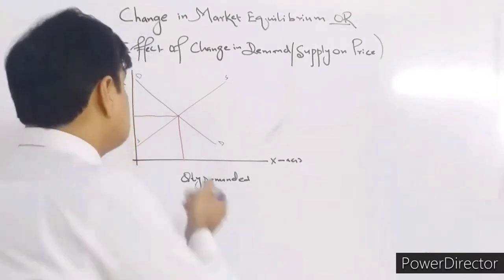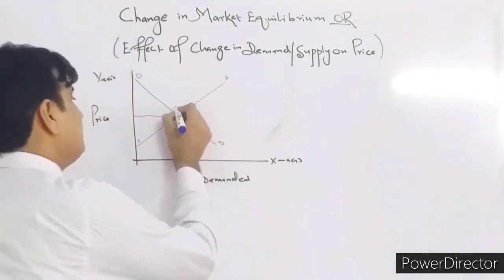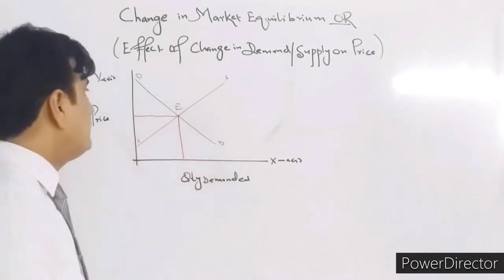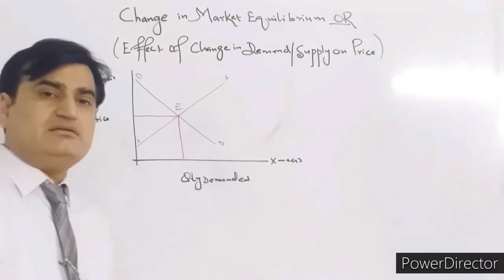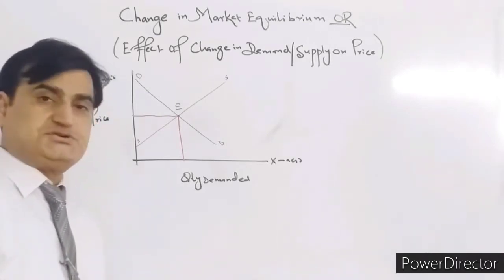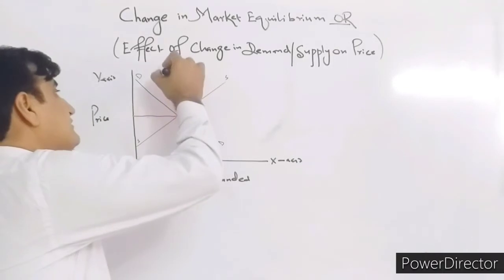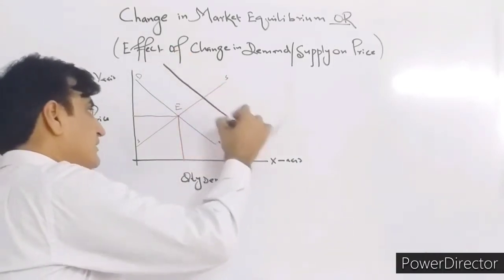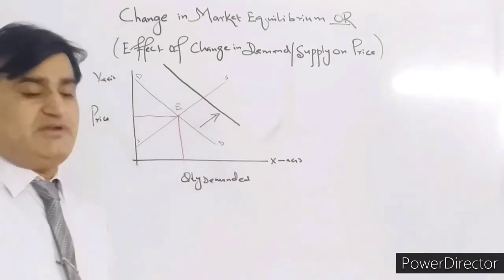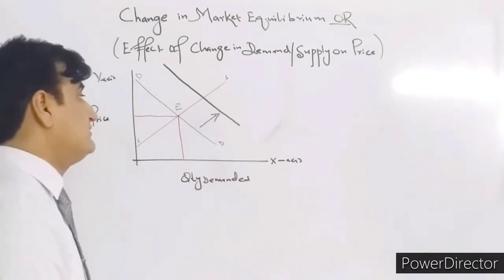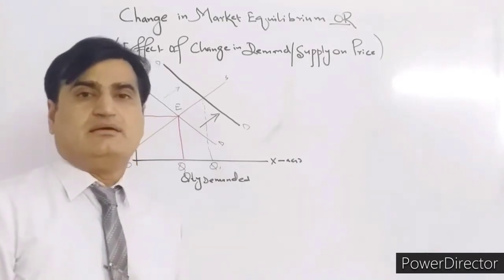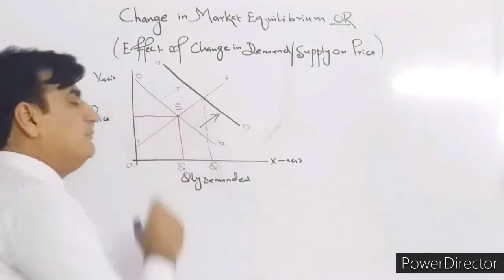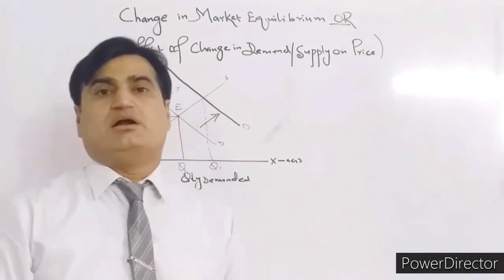The market equilibrium is achieved at a point where demand and supply intersect at point E. Now we will understand what the effect would be when the market equilibrium price is disturbed when the demand curve shifts rightward — how does it affect the equilibrium price, and why is the market equilibrium disturbed?